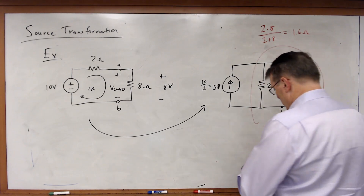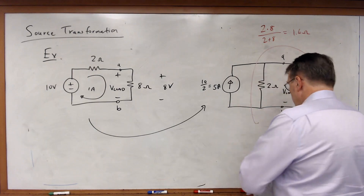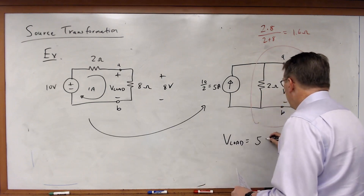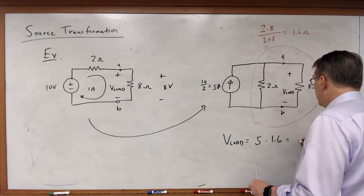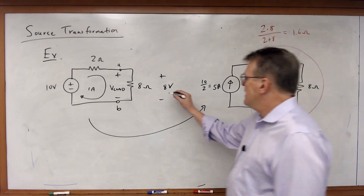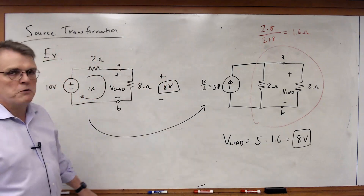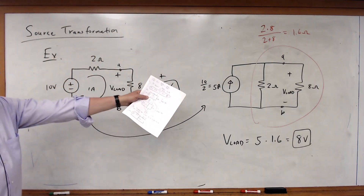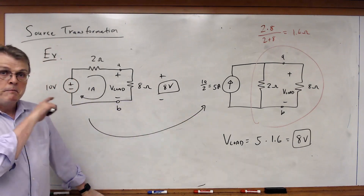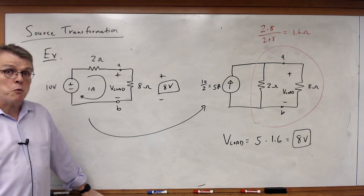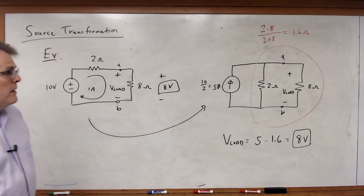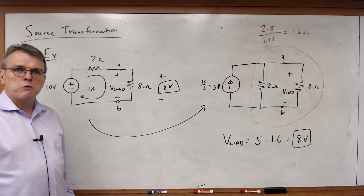By Ohm's Law, V-load equals 5 times 1.6, equal to 8 volts. Not surprisingly, I get the same voltage across the resistors. As far as the 8 ohm resistor is concerned, it doesn't matter which circuit I use — they're equivalent. Source transformation works for either one, and I can go from this circuit to that circuit and back again.